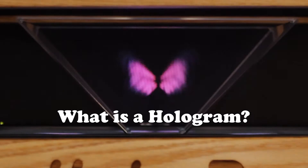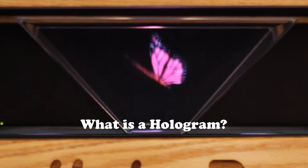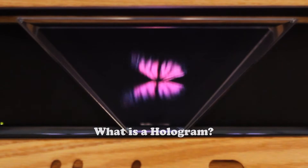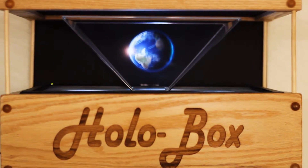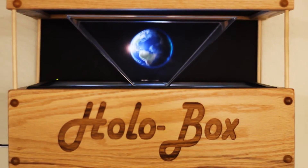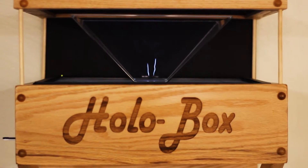What is a hologram? A hologram is a three-dimensional image formed by the interference of light beams from a laser or other coherent light source.